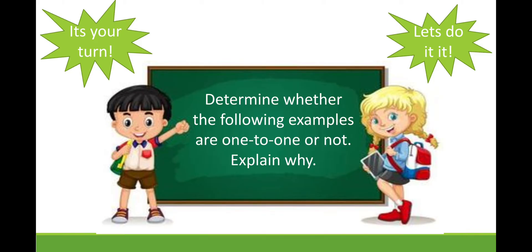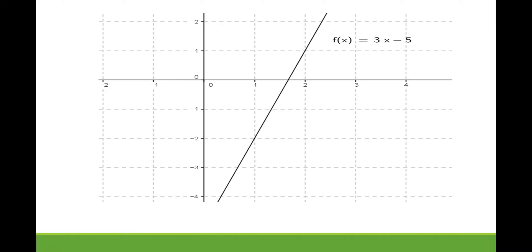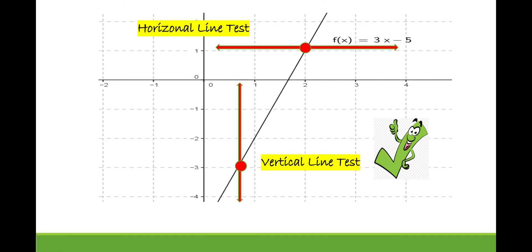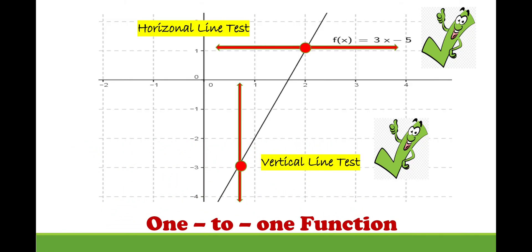Now it's your turn. Determine whether the following examples are one-to-one or not, then explain why. Looking at the first graph: if we draw a vertical line, it intersects at one point, so it satisfies the vertical line test. Drawing a horizontal line, it also intersects at exactly one point, so it satisfies the horizontal line test. Since both tests are satisfied, therefore it is a one-to-one function.